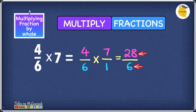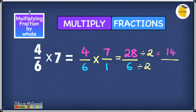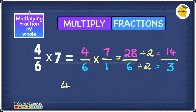We know that both 28 and 6 are multiples of 2, so we simplify by dividing both by 2. 28 divided by 2 gives you 14, and 6 divided by 2 gives you 3, so we have 14 over 3. If needed, you can convert 14 over 3 into a mixed number, giving you 4 as the whole number with 2 over 3 — so 4 and 2 over 3.